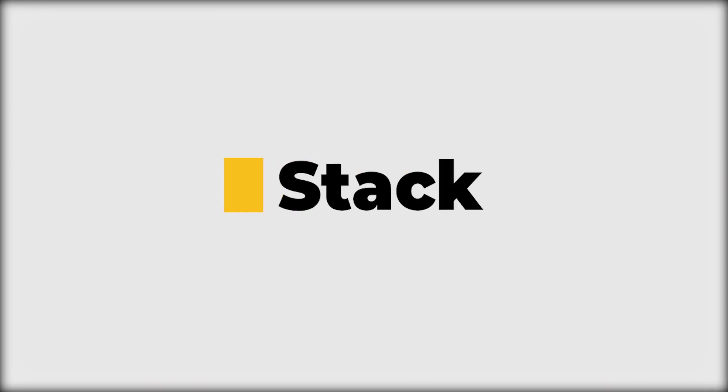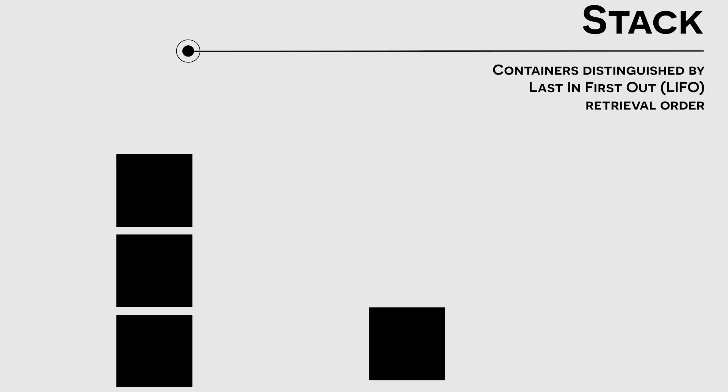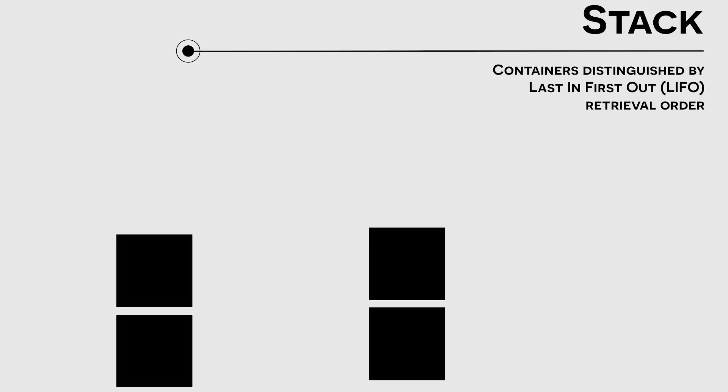The first of these data structures is a stack. A stack is a linear data structure that is optimized for the LIFO retrieval order. And if you're not sure what LIFO stands for, LIFO stands for Last In First Out. And this is basically the major purpose of a stack and what the stack is optimized for.